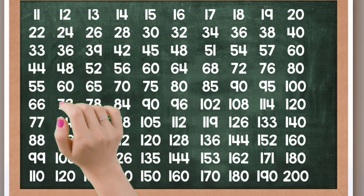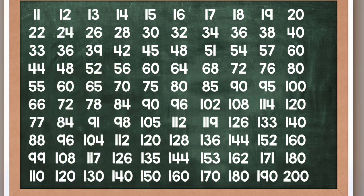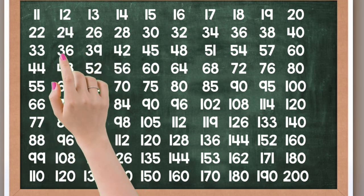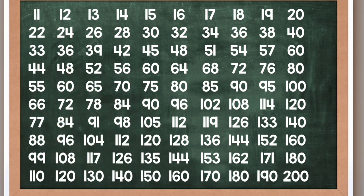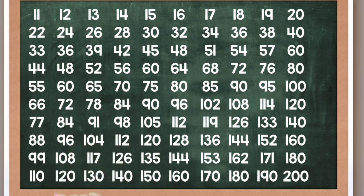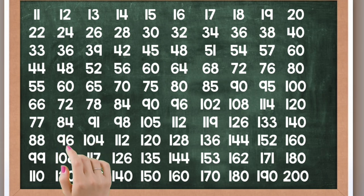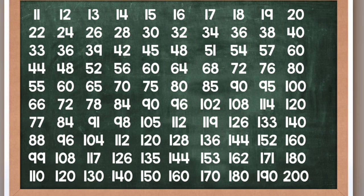12 times 1 is 12, 12 times 2 is 24, 12 times 3 is 36, 12 times 4 is 48, 12 times 5 is 60, 12 times 6 is 72, 12 times 7 is 84, 12 times 8 is 96, 12 times 9 is 108.